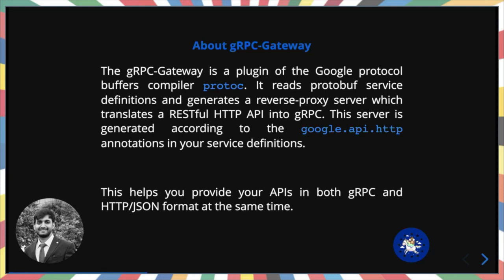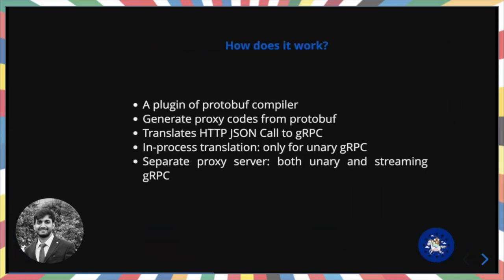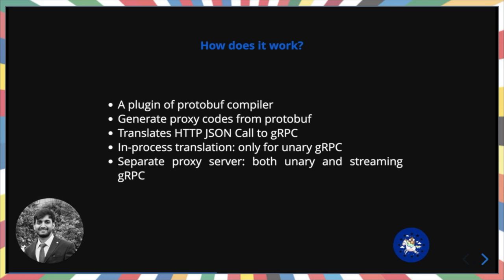The gRPC-gateway is a plugin of the Google Protocol Buffer compiler, protobuf. It reads the protobuf service definition and generates a reverse proxy server which translates a RESTful API to gRPC. This helps you provide your APIs in both gRPC and HTTP/JSON format at the same time.